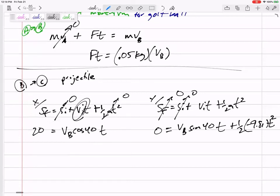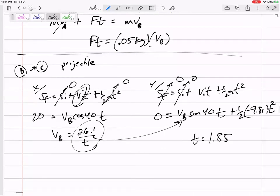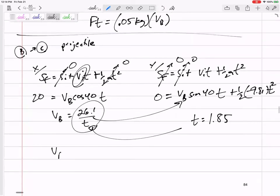I've got something like v_B = 26.1/t. Plug that in and solve for t. I've got t = 1.85. Come back over here and I've got v_B = 14.115 meters per second. So now I'm going to go back to my momentum equation.